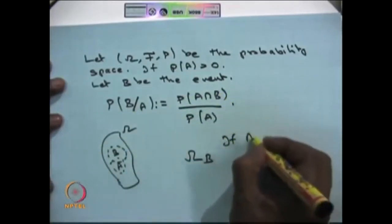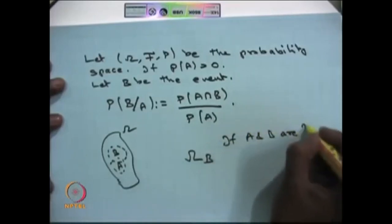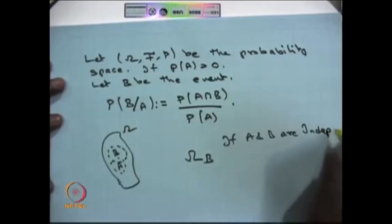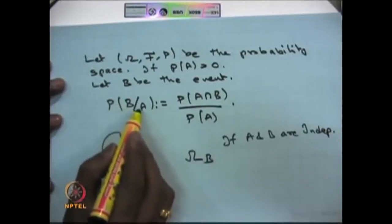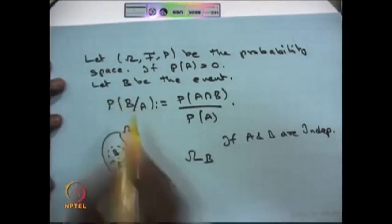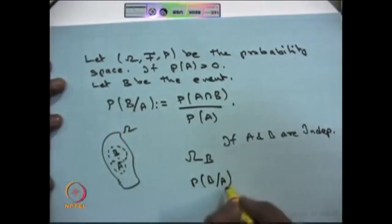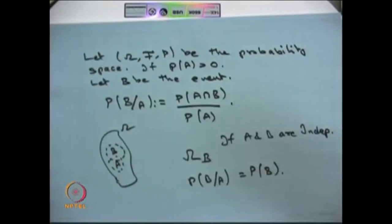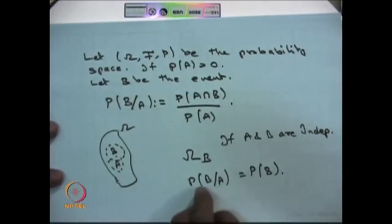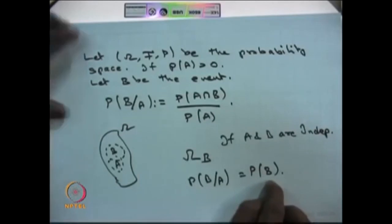If events A and B are independent, then there is no way of relating the probability of B to A. In that case, P(B|A) equals P(B) — meaning there is no dependency between event B and event A. Therefore, the occurrence of event A does not affect event B in any way, and P(B) equals P(A ∩ B) divided by P(A), which simplifies to just P(B).